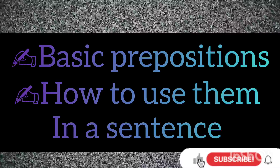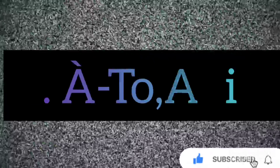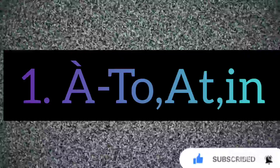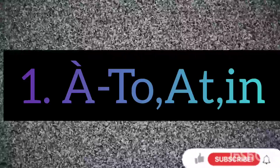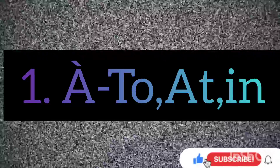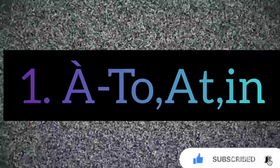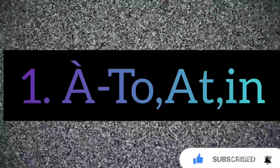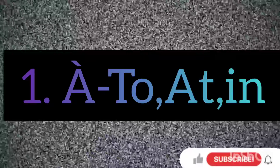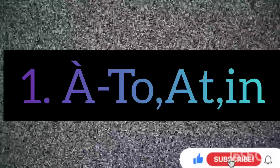What are the basic prepositions we need to know, and how can we make use of them in a sentence? The first one we have is 'à'. 'À' has a son's graph — the mark on that letter A is called a son's graph. 'À' means 'to', 'at', or can also be used as 'in'.